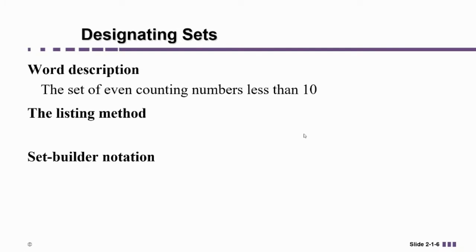Who remembers what even means? Two, four, six. That's right. Anything that's a multiple of two or divisible by two. Good. If we were asked to list them, what would be the set of even counting numbers less than 10? What would the elements of that set be? Good. Two, four, six, and eight are even numbers that are less than 10.